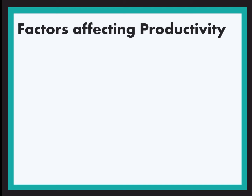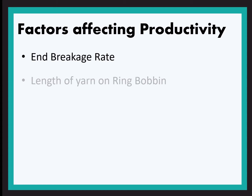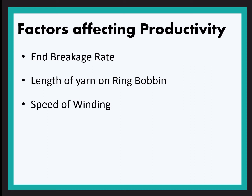Now let us move on to the factors affecting the productivity of the winding machine. The first factor is end breakage rate. When an end breaks, the spindle needs to stop for the mending of the end, be it by splicing or by knotting. Next is the length of the yarn on the ring bobbin — if the length is less, then the machine needs to stop more frequently for the replenishment of a new full bobbin.